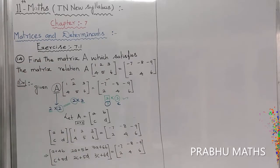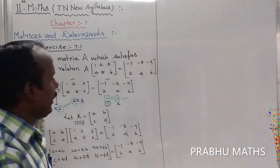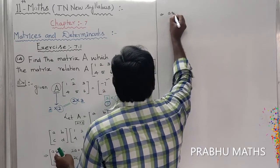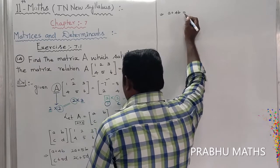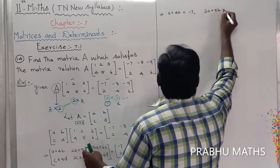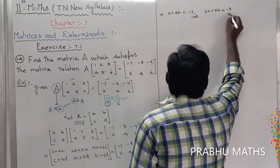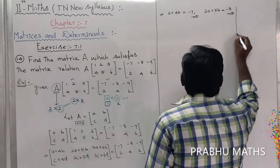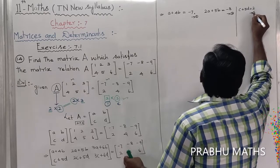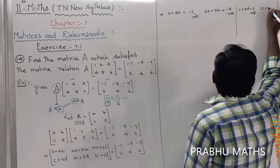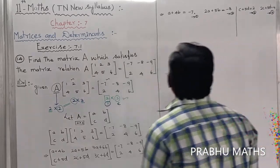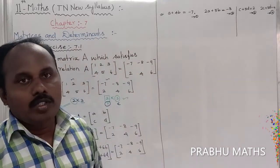Both sides are 2 by 3 matrices. Comparing corresponding entries: first row gives A+4B = -7 (equation 1), 2A+5B = -8 (equation 2). For the second row: C+4D = 2 (equation 3), 2C+5D = 4 (equation 4).